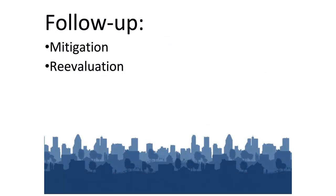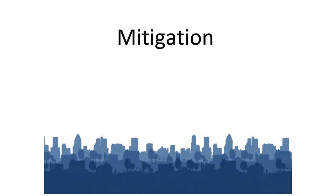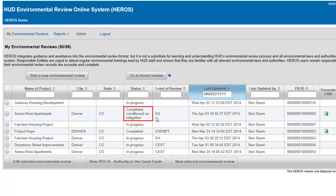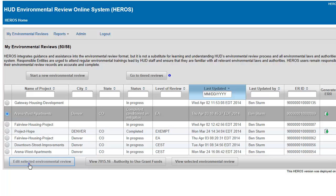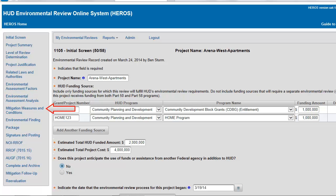Follow-up is sometimes necessary on environmental reviews that have already been completed. This includes recording mitigation actions and reevaluating the environmental review. Some completed environmental reviews are conditioned on mitigation, meaning that mitigation measures were found to be necessary during the environmental analysis.